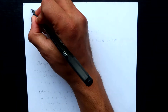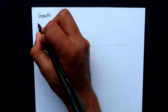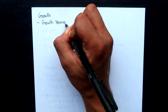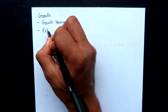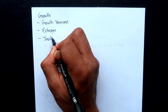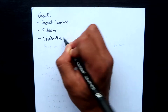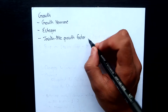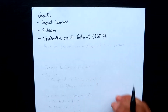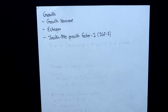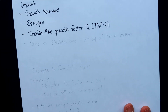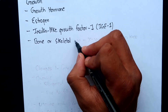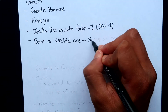Growth of height in an adolescent girl is mainly due to hormones. The important hormones are growth hormone, estrogen, and insulin-like growth factor. The bone or skeletal age is determined by X-ray of the hand or knee.